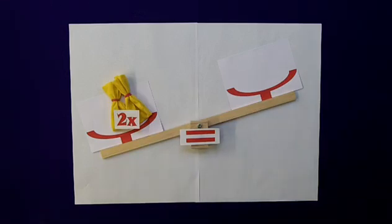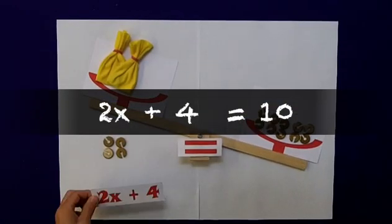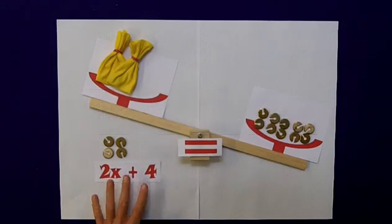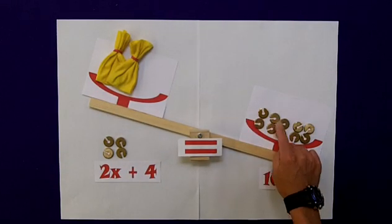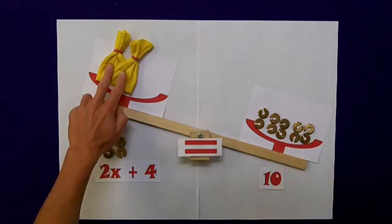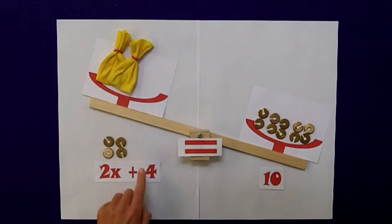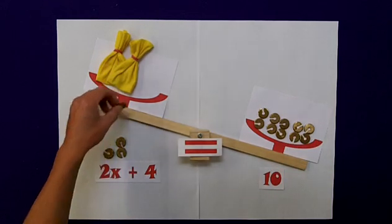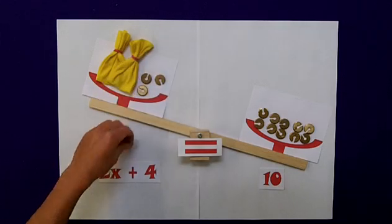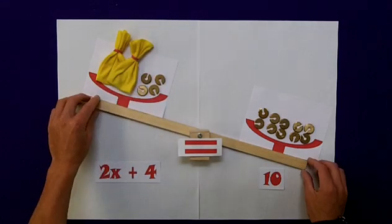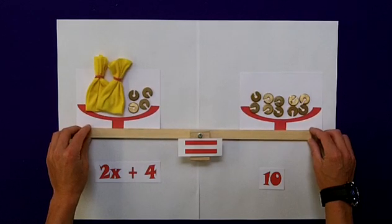I'd like us to consider trying to solve the equation of 2x plus 4 is equal to 10. Now, I have my 10 weights on this side. I have my 2x on this side. I now need the addition of 4 in order for it to be balanced. As I'm told, that is the actual equation. 2x plus 4 equals 10. Therefore, it has to be balanced.